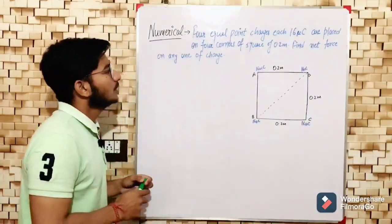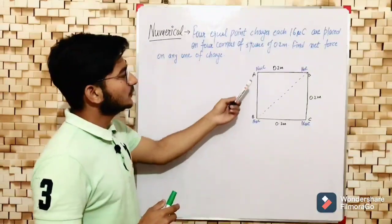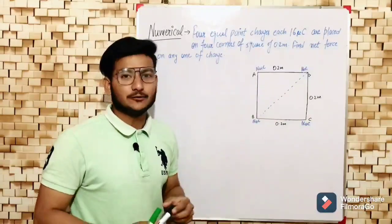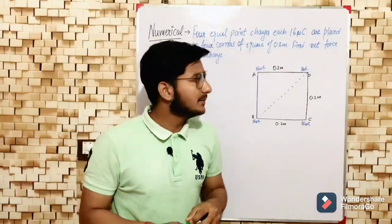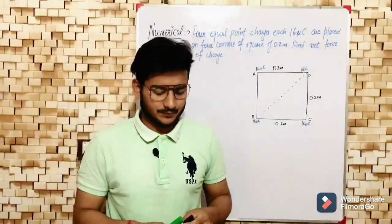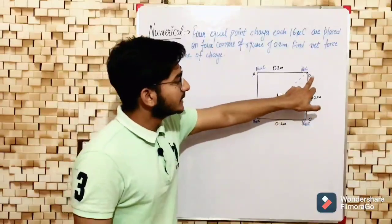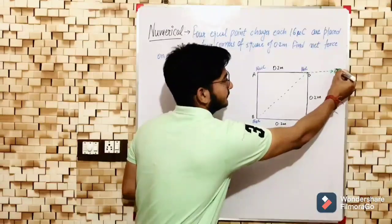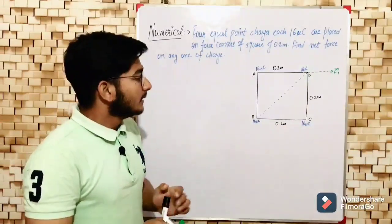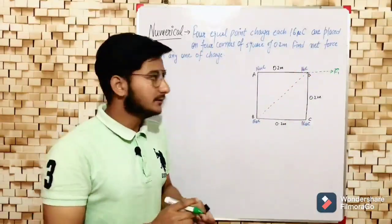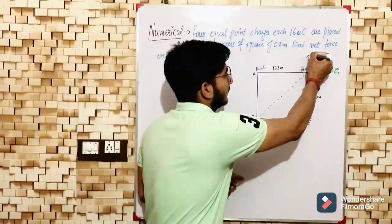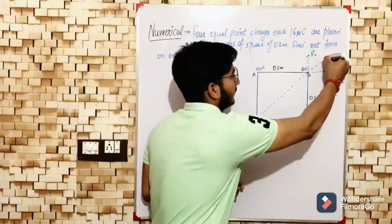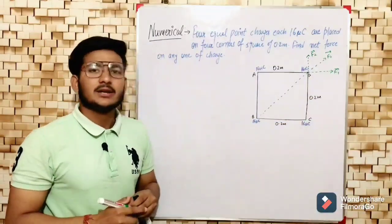In this question we are given four charges, each of 16 microcoulombs, placed at the corners of a square ABCD, and we are asked the net force according to the superposition principle. First, we identify which forces act on charge D. The charge at A exerts a repulsive force on D represented by F1 vector. Similarly, charge C also exerts a repulsive force on D represented by F2 vector, and charge B exerts a repulsive force on D represented by F3 vector, because in each case the charges are like in nature.